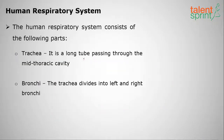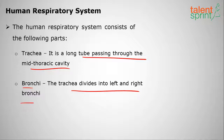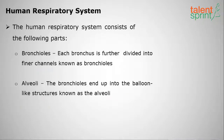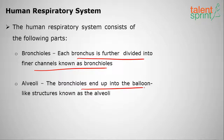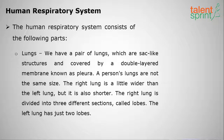Next is the trachea, a long tube passing through the mid-thoracic cavity. The trachea divides into left and right bronchi, as seen in the figure. Each bronchus is further divided into finer channels called bronchioles. The bronchioles end in balloon-like structures called alveoli, located inside the lungs.